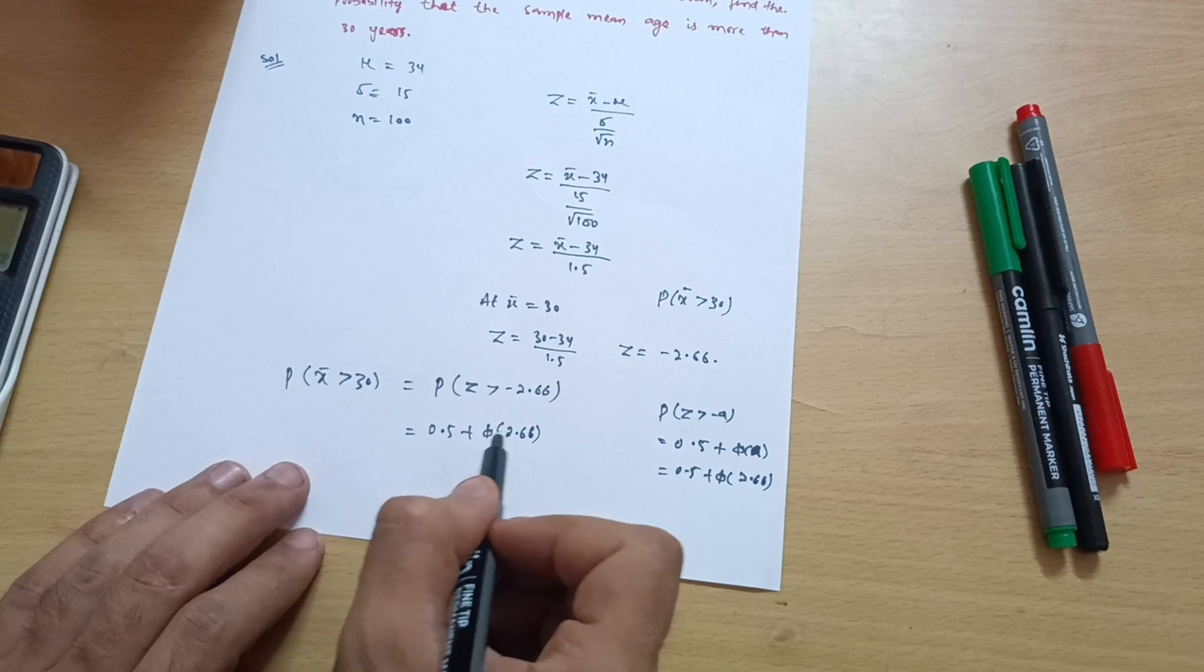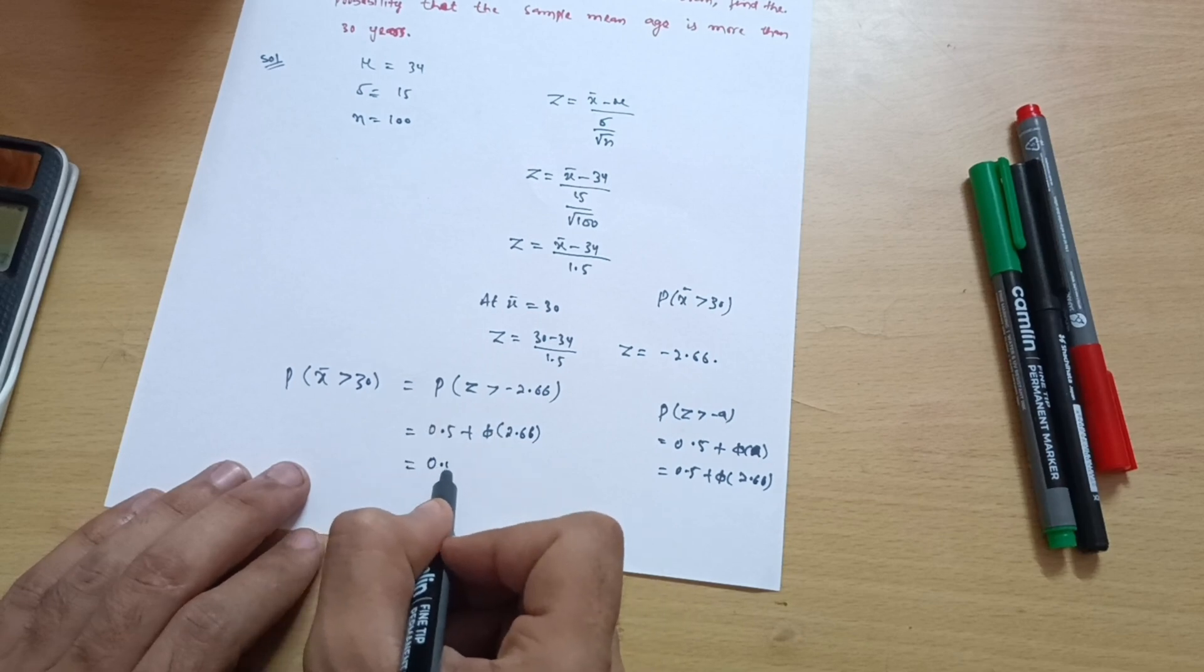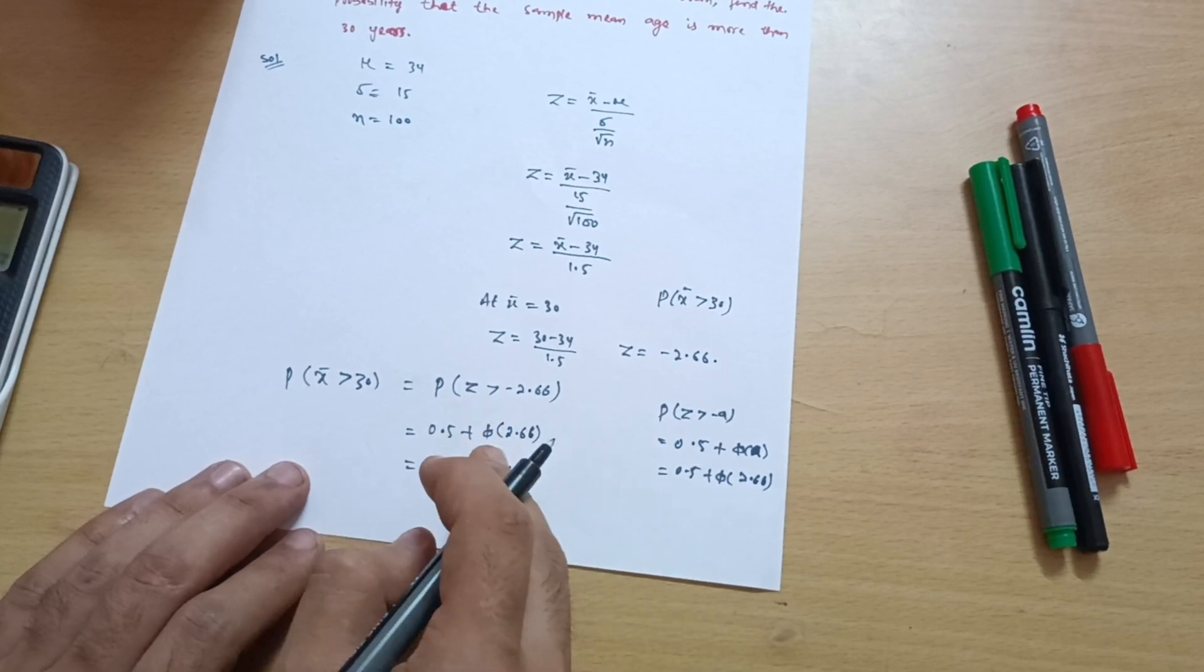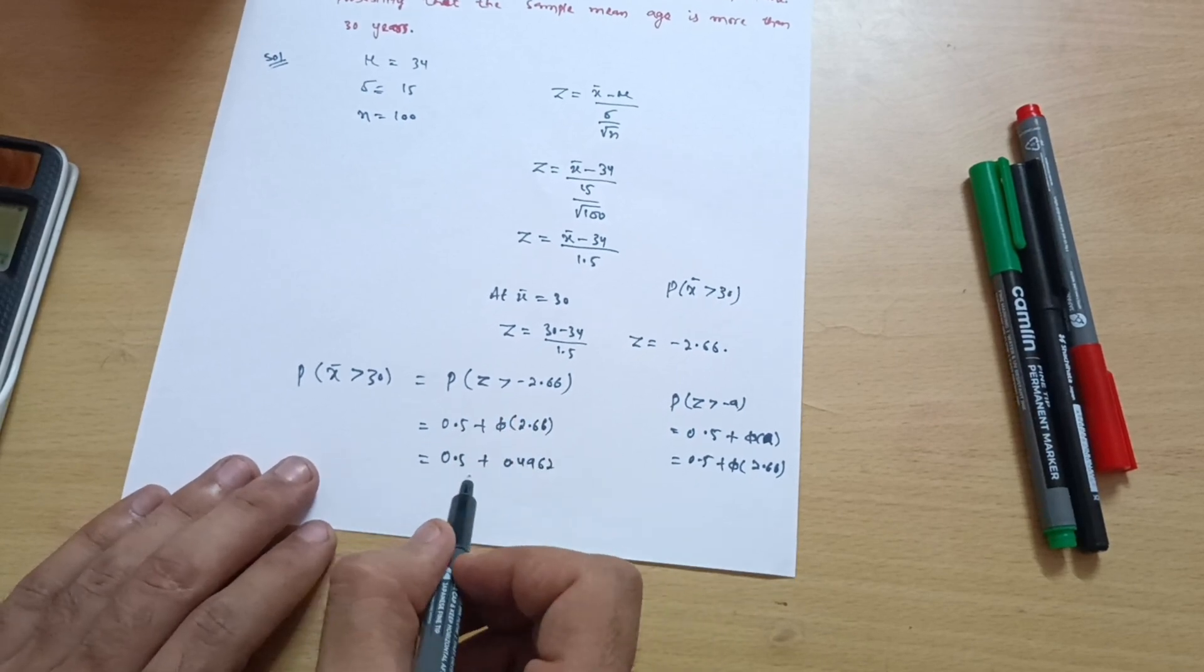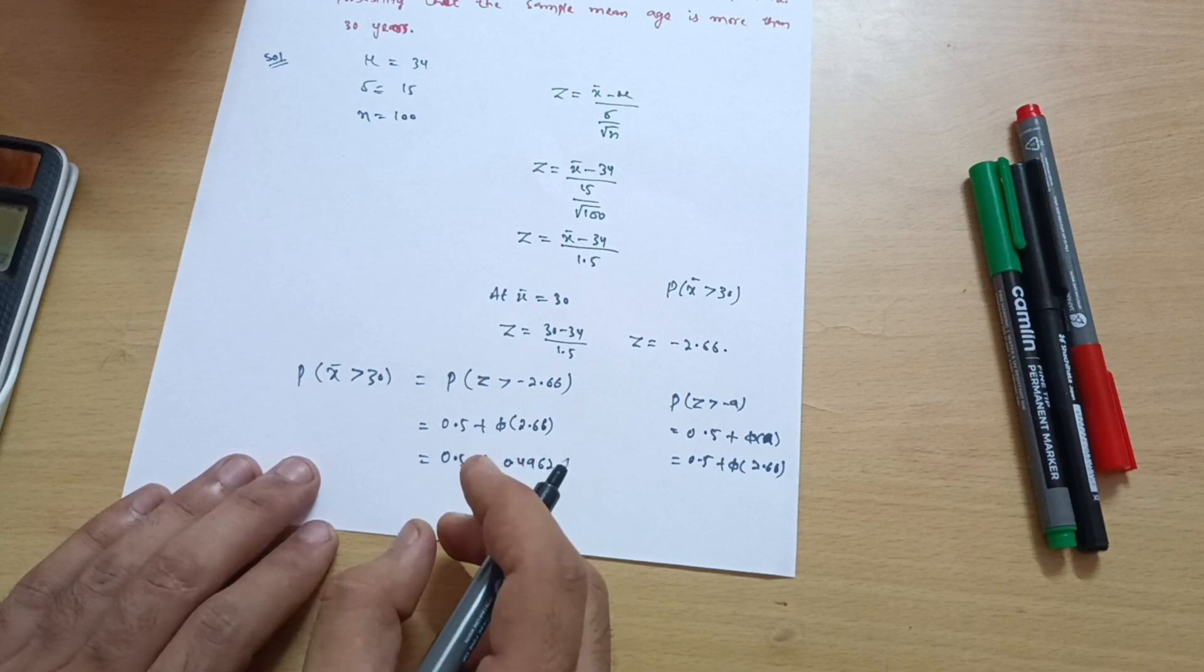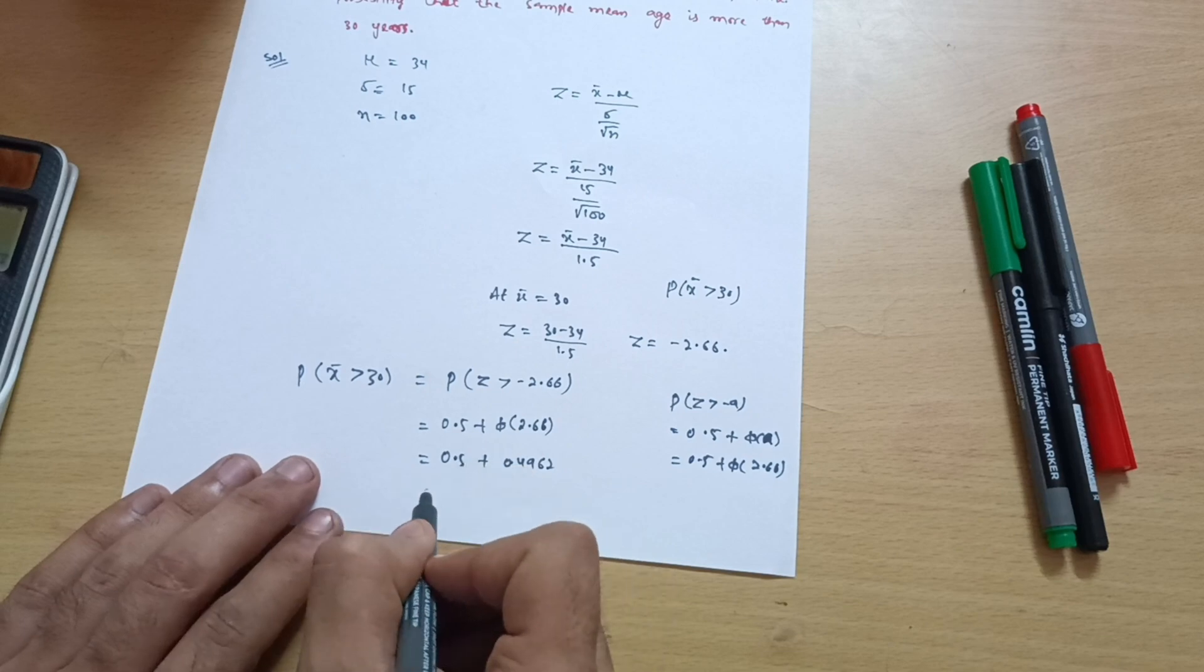So 0.5 plus that particular value. What I am getting here is 0.5 plus 0.4962 you will get in the normal distribution table. Otherwise I can show you in this problem also, but it will take a lot of time to add that particular video. Which is equal to, let me calculate this one.